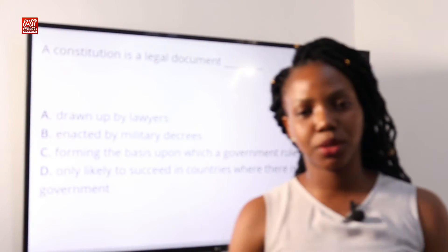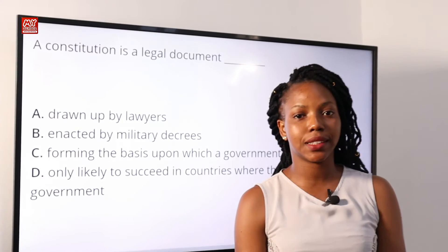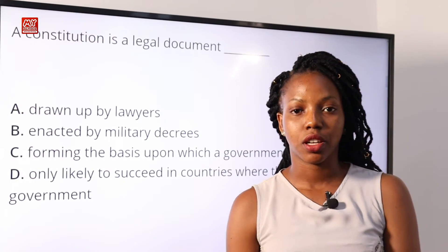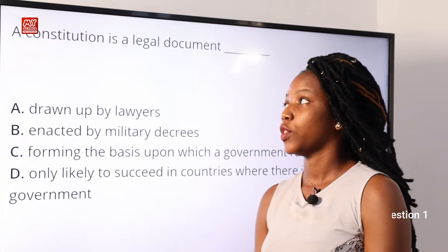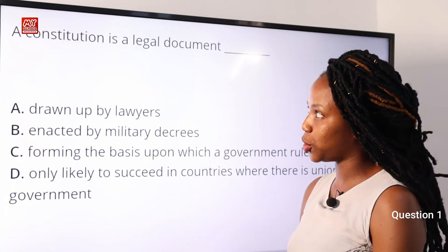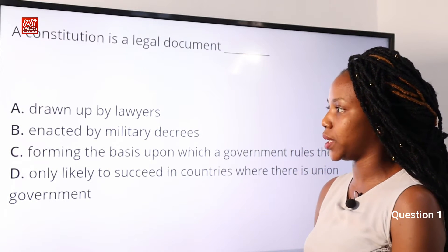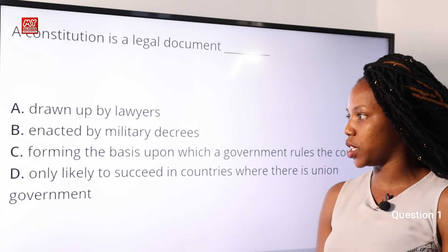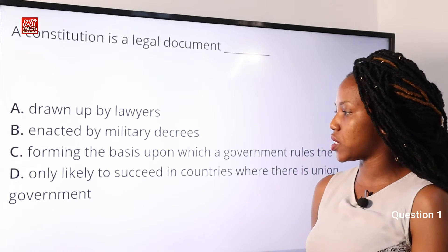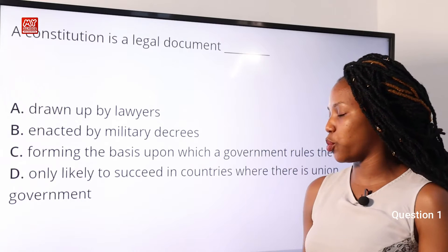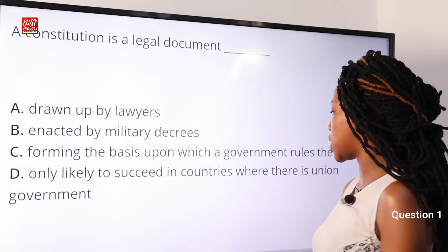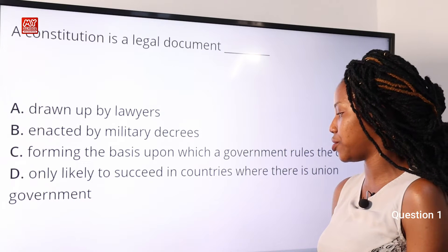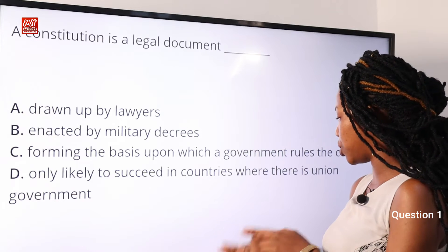Welcome back to my school channel. In this video we'll be attempting questions 1 to 20. Now let's begin with question 1. A constitution is a legal document — A: drawn up by lawyers; B: enacted by military decrees; C: forming the basis upon which a government rules the country; D: only likely to succeed in countries where there is union government.